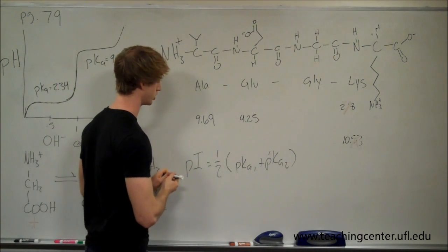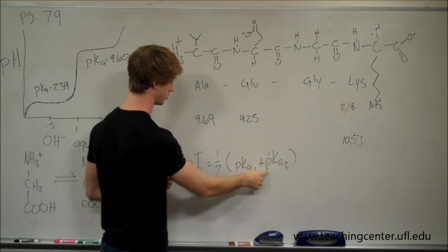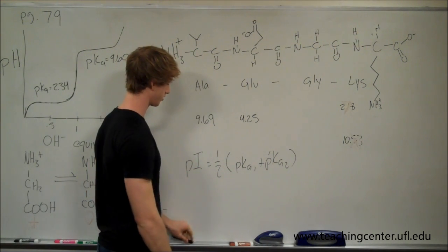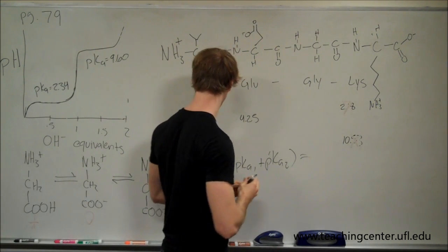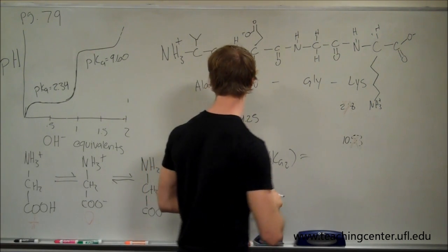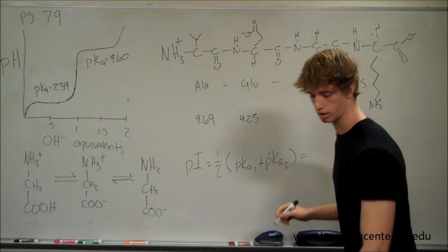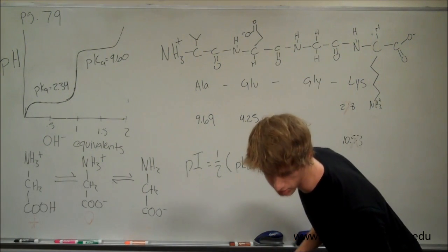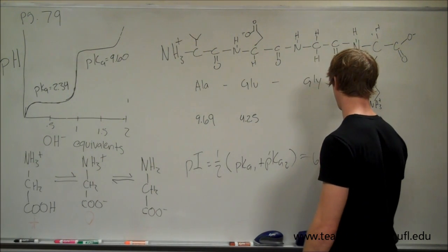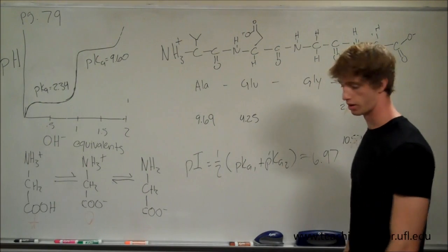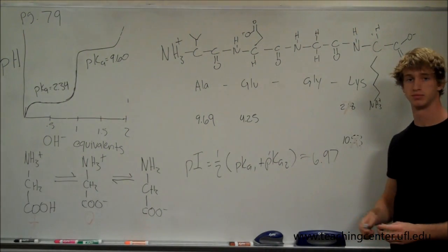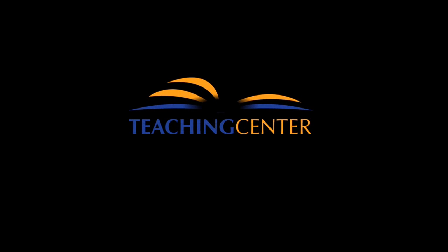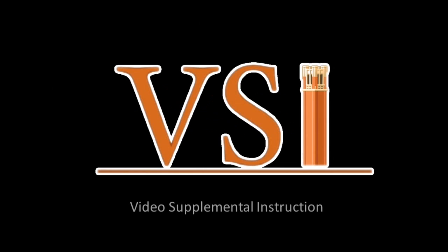We plug that into our equation, pKa1 and pKa2, and divide it by one half. And we should get, let's see, I have a calculator on me, you can crunch it all out. Let's see what they tell us, 6.97. And that is how you can solve for the isoelectric point. Thank you.